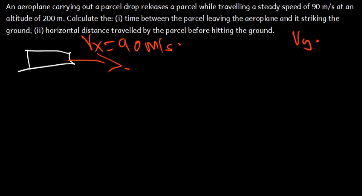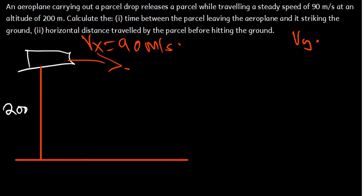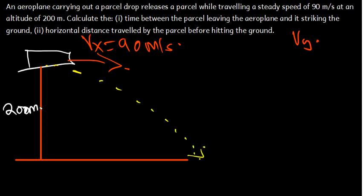We don't have Vy. From the ground all the way to where the airplane is, the height is 200 meters. As the airplane moves in the x direction, the parcel is dropped and moves like a projectile — starting from there and traveling until it reaches the ground. The horizontal distance under projectile motion is called the range.